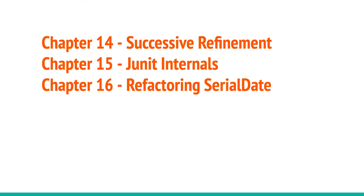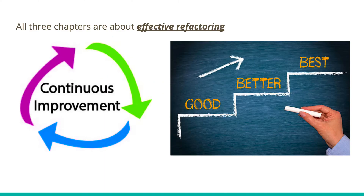Hi, in this video I will summarize three chapters from Clean Code: chapters 14, 15, and 16. All three chapters are about refactoring. The central theme is that there is always a possibility to improve our code base from its current state — that is the theme of these three chapters, where the author goes into various use cases of how we can effectively refactor so that our code gets better over time.